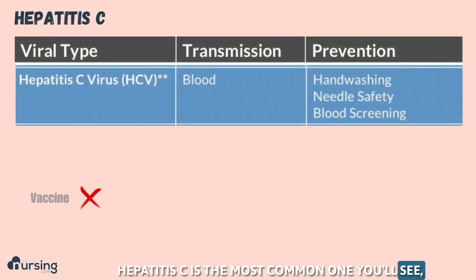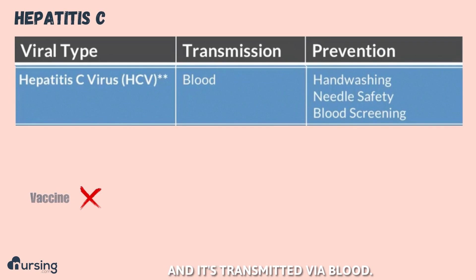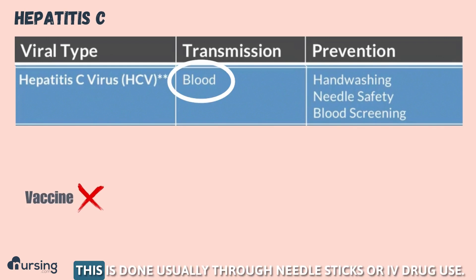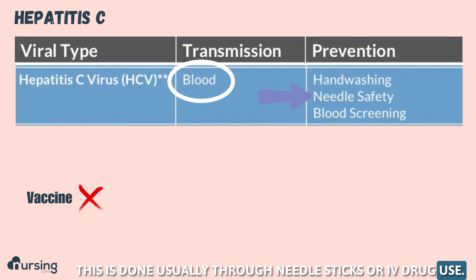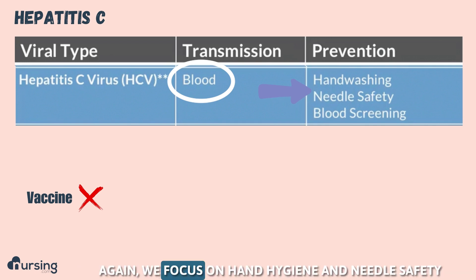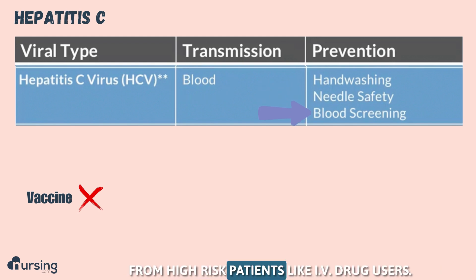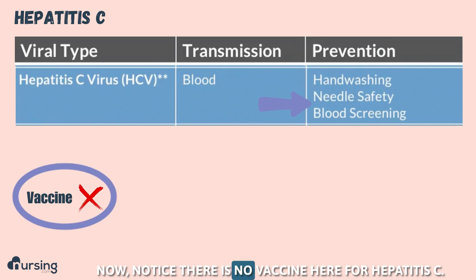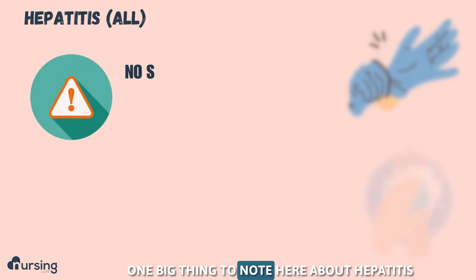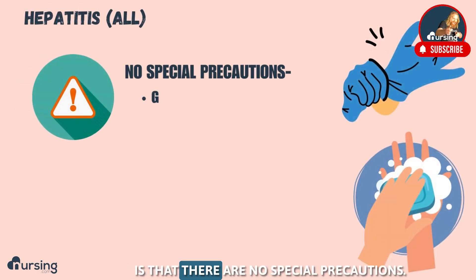Hepatitis C is the most common one you'll see, and it's transmitted via blood — usually through needle sticks or IV drug use. We focus on hand hygiene and needle safety, as well as screening donated blood from high-risk patients like IV drug users. Notice there is no vaccine for hepatitis C.